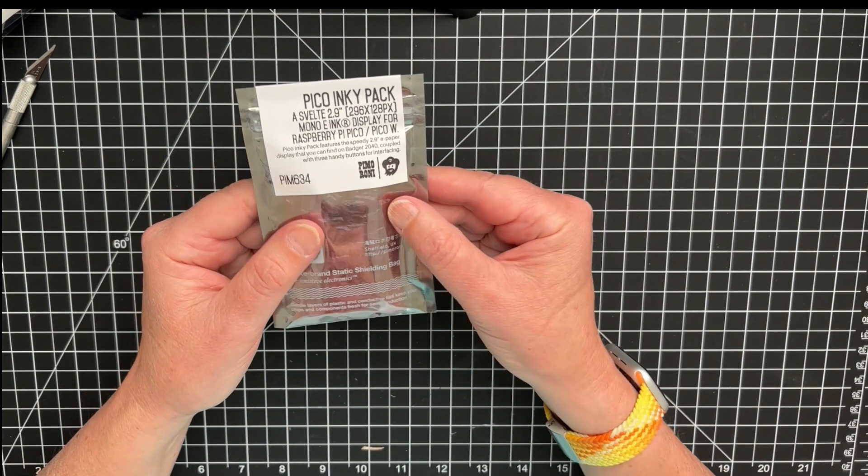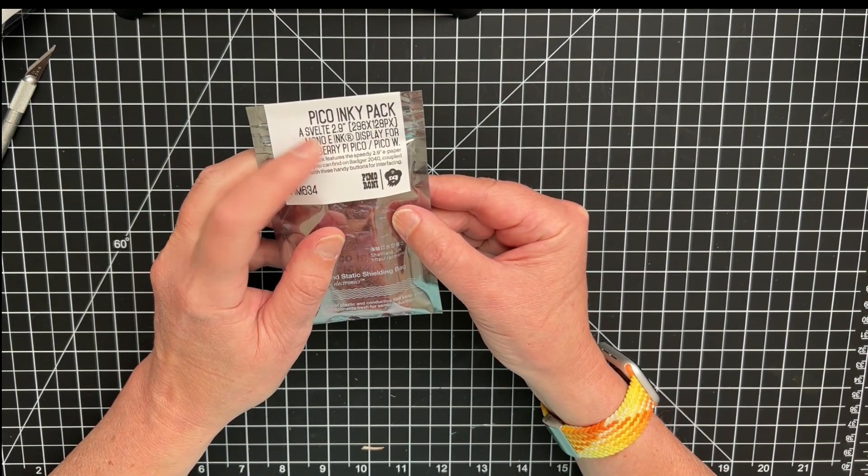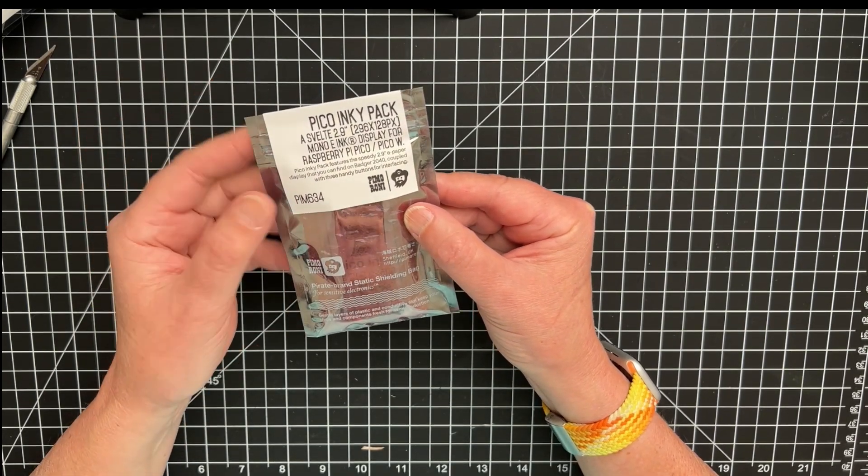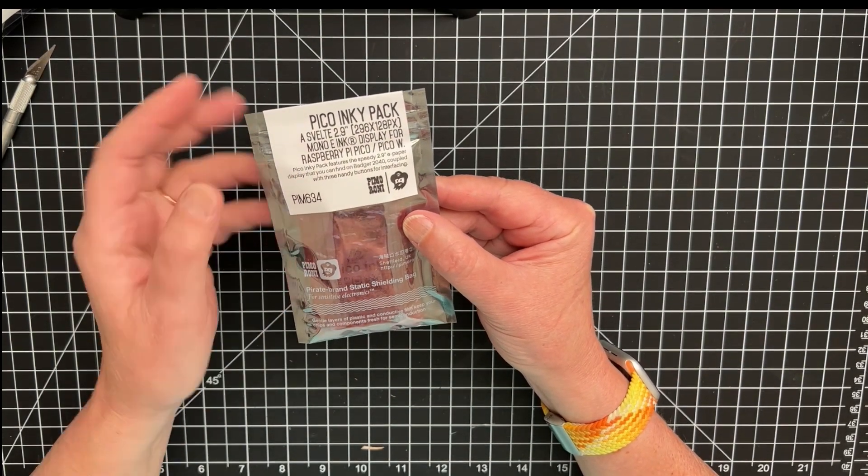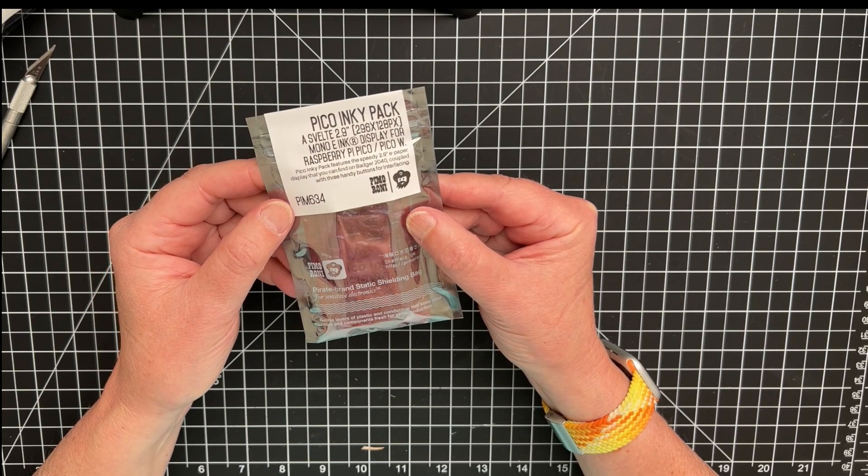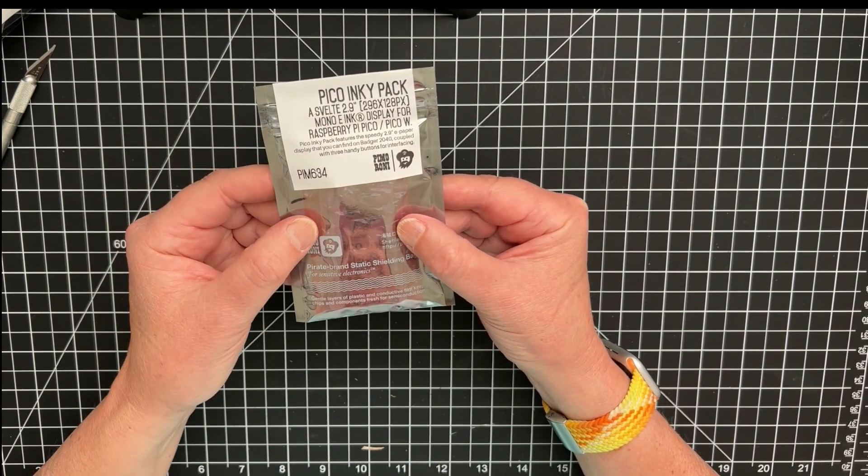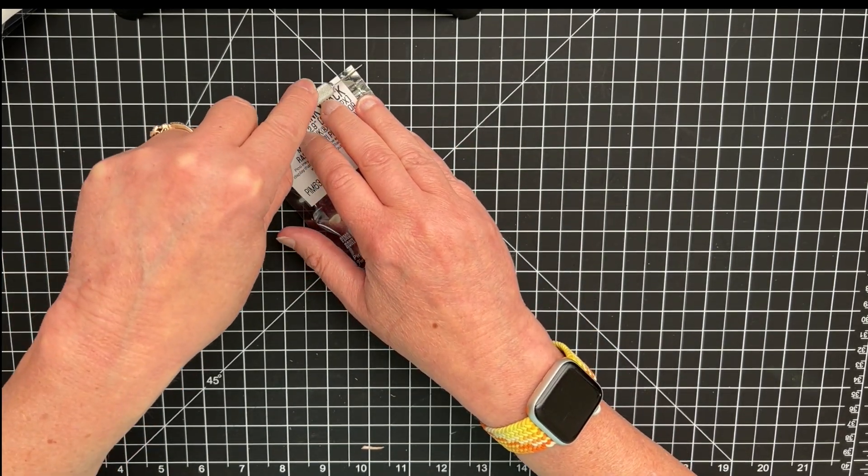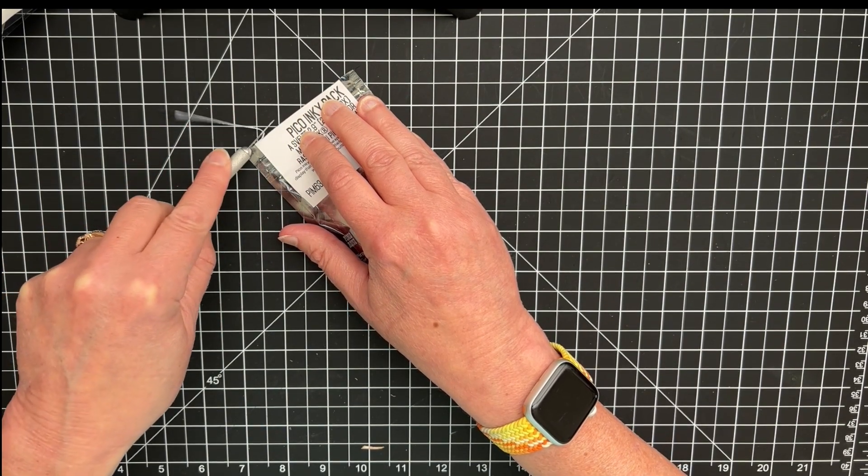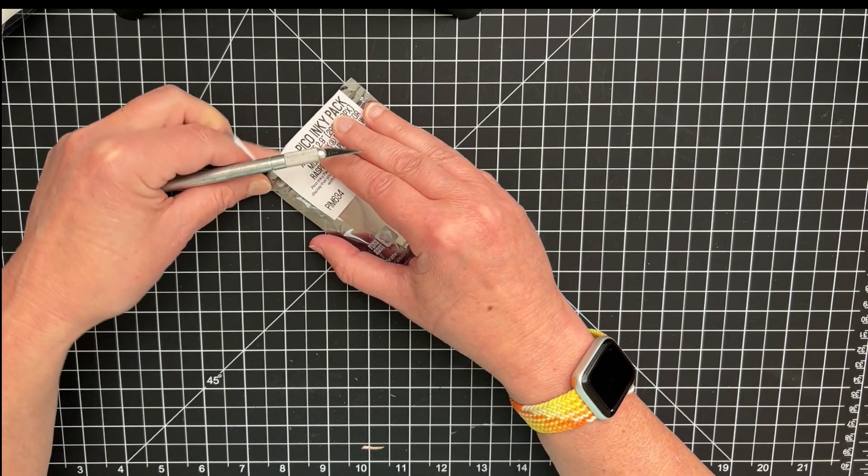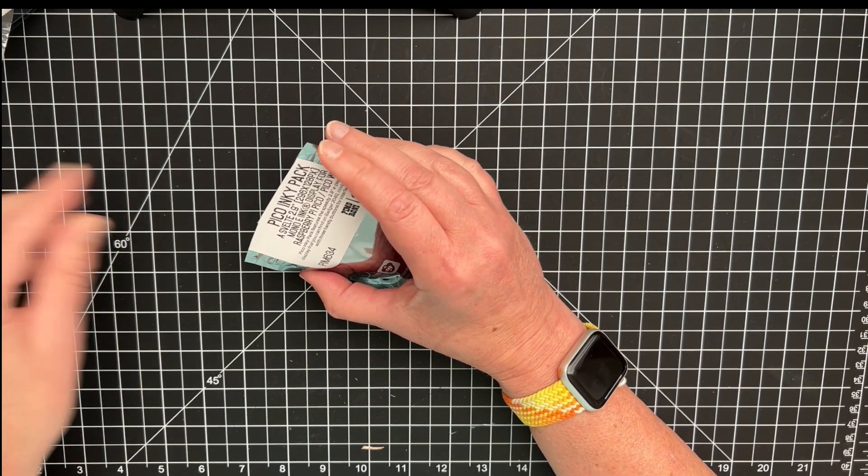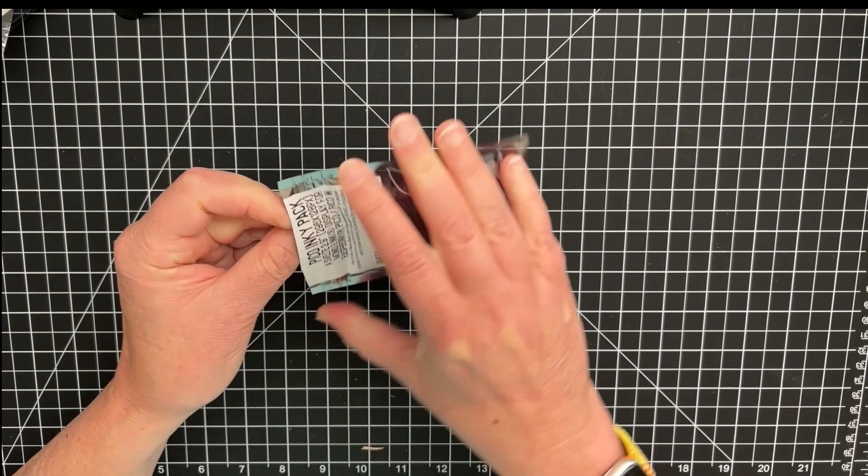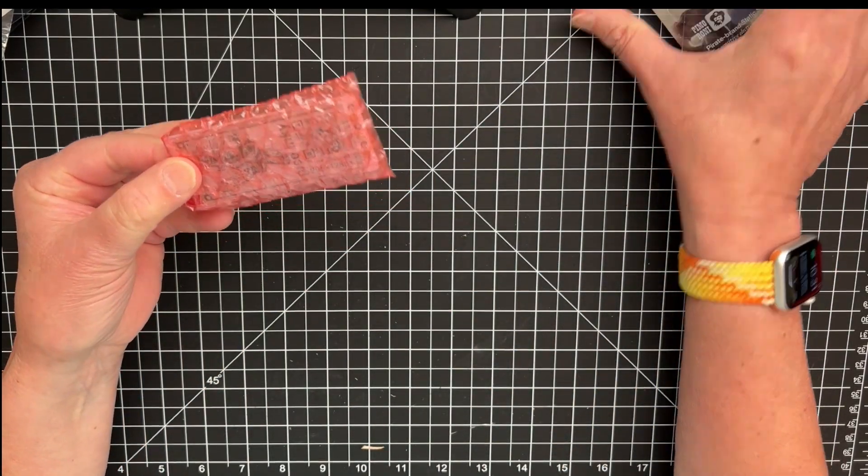And then last, I bought an e-ink display that's for the Pico and Pico W. I've been seeing a lot of people talking and doing projects with e-ink and I haven't ever explored that. So I decided to get a little display to practice with, see what it's all about. So let's go ahead and open that up. So this is one of those packs, I guess, that goes on the back of your Pico. So they're good for experimenting, I think.